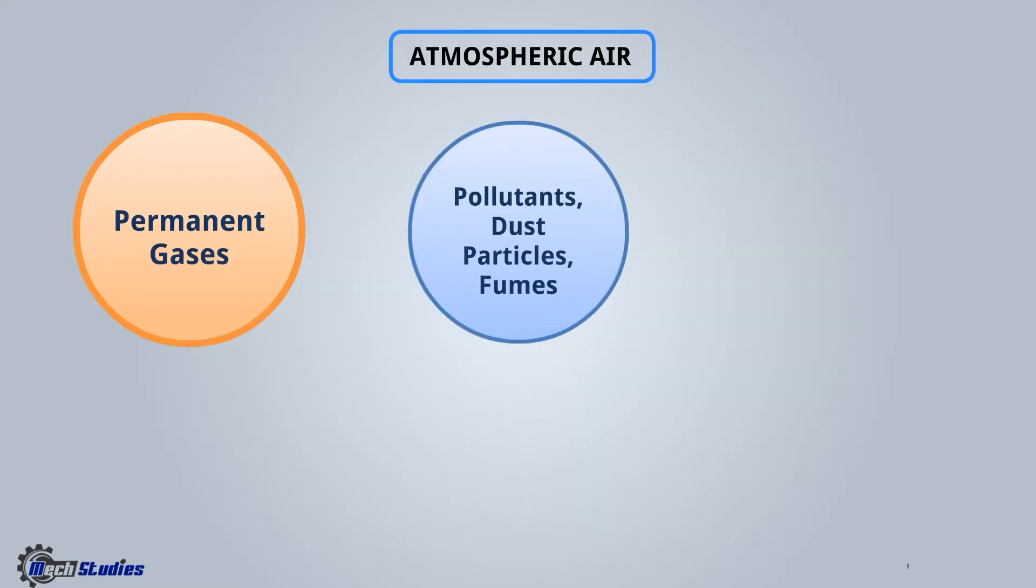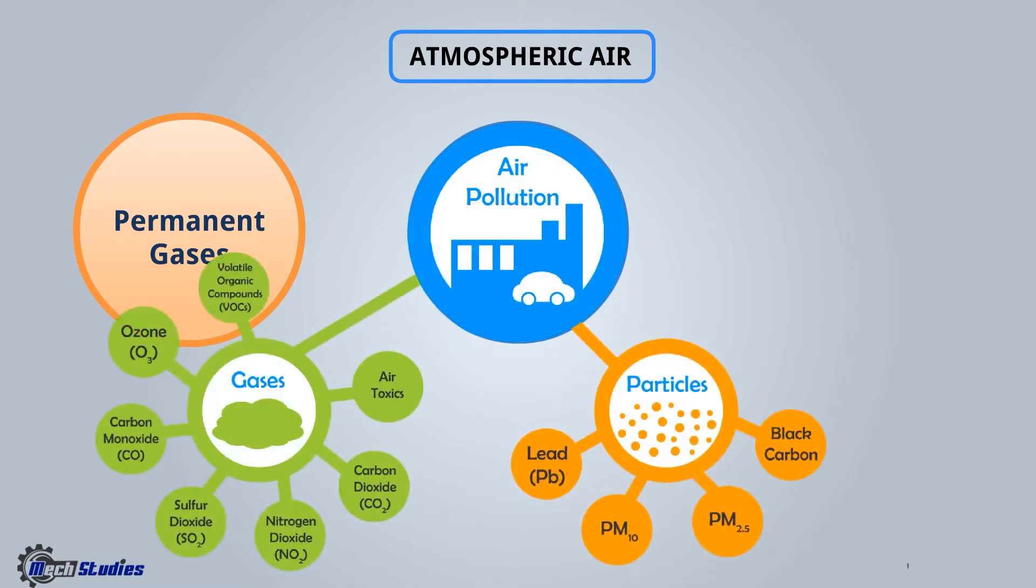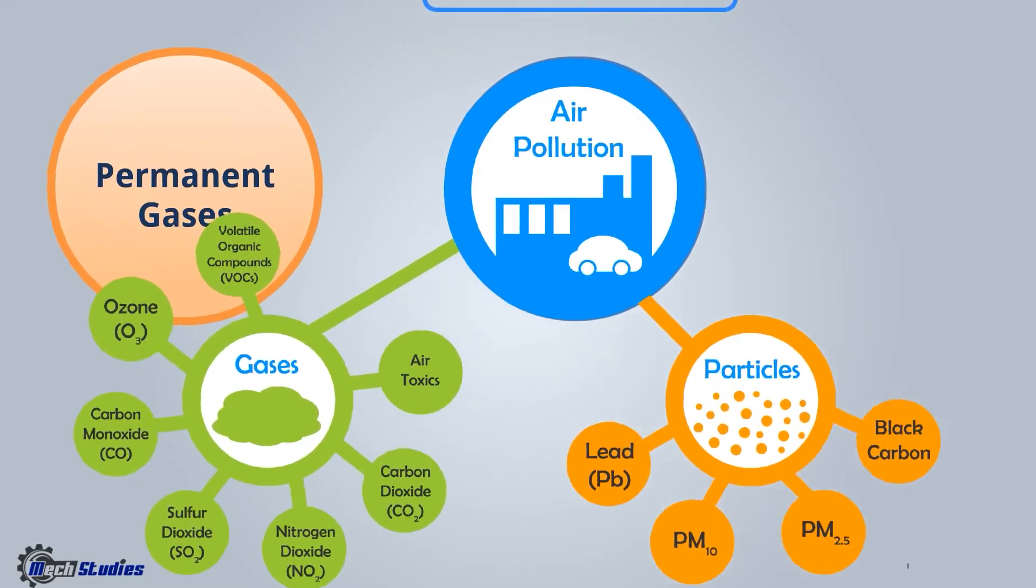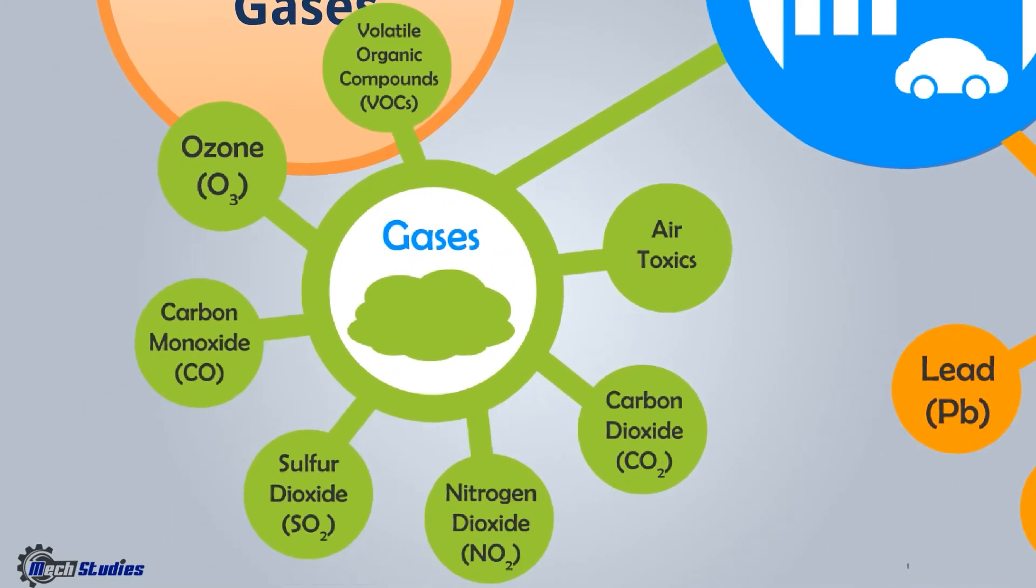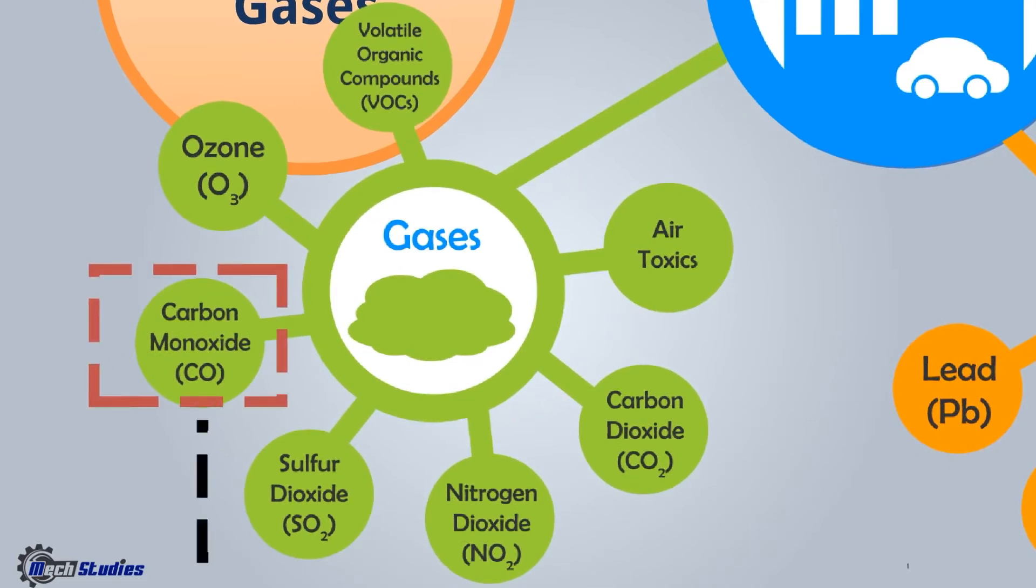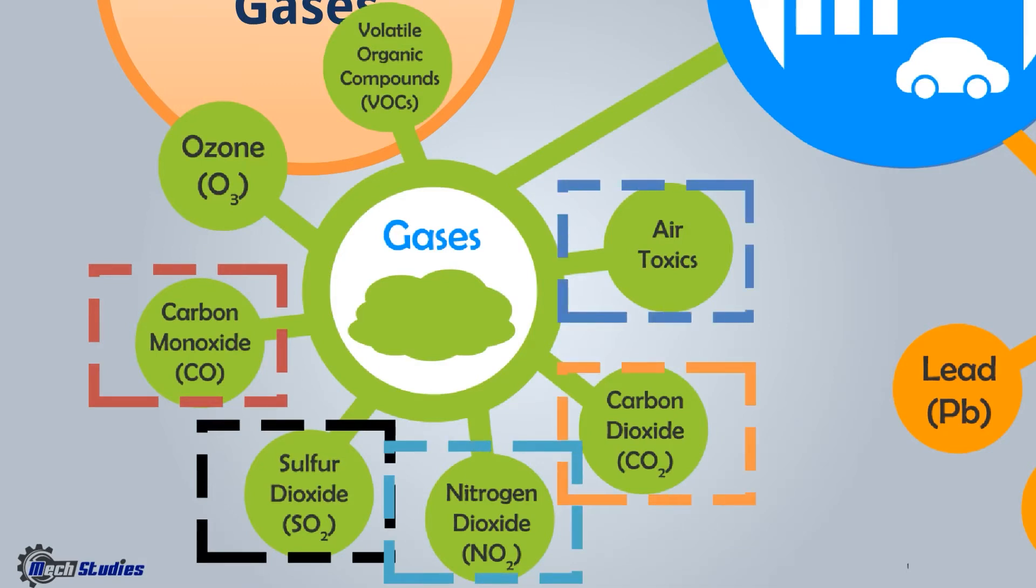Now pollutants: dust particles and fumes. Atmospheric air consists of two different pollutants mainly - gases and particles. There are different gases that may be present in the air: carbon monoxide, sulphur dioxide, nitrogen dioxide, carbon dioxide, air toxics, volatile organic compounds, and ozone.